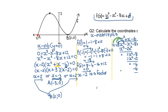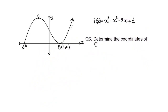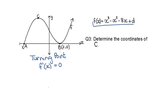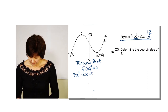The next question asks for the coordinates of point C, which is a turning point. At a turning point, the derivative equals zero because the gradient is zero. The derivative of f(x) — with D now known to be 12 — is 3x² minus 2x minus 8, and this must equal zero.